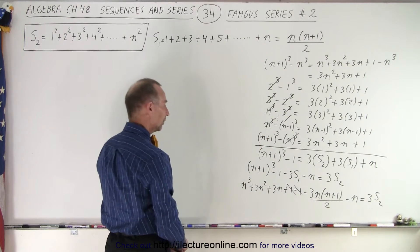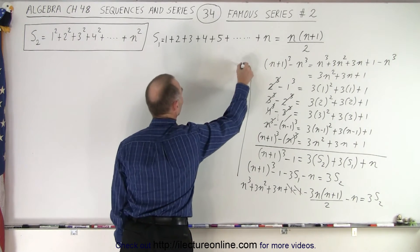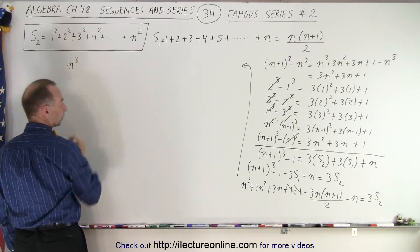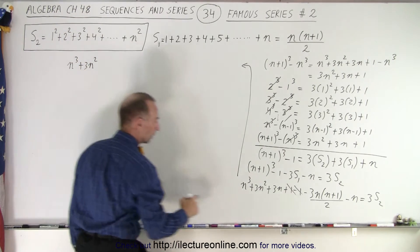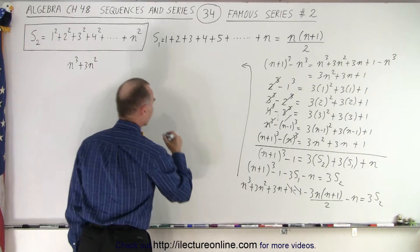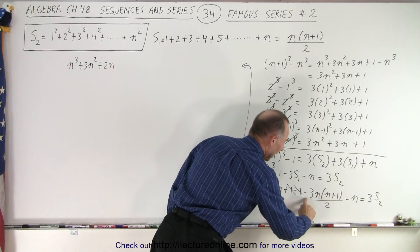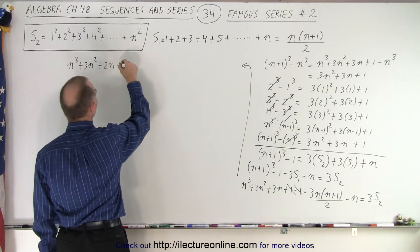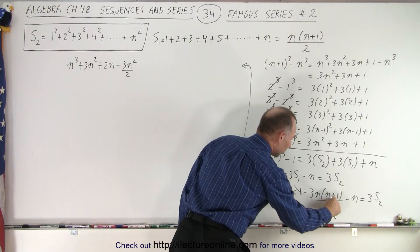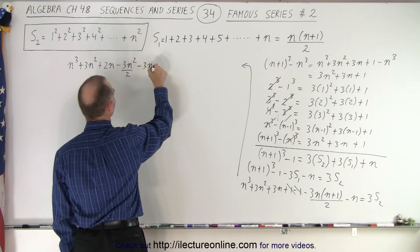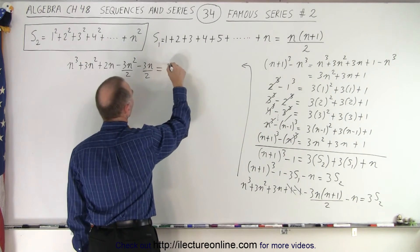The plus 1 and minus 1 cancel out. We have 3n minus n, which becomes 2n. Moving over here, we end up with n cubed plus 3n squared plus 2n, minus 3n times n divided by 2 — that's minus 3n squared divided by 2 — minus 3n divided by 2, and that equals 3 times S2.